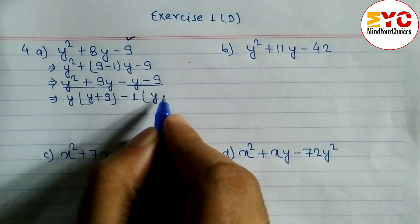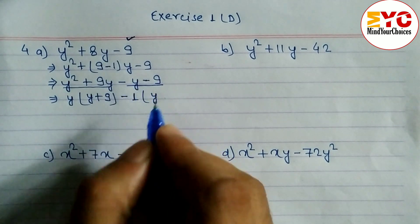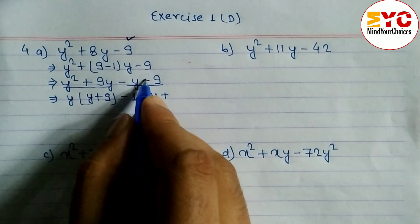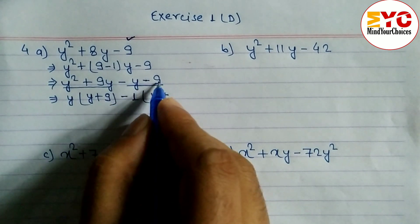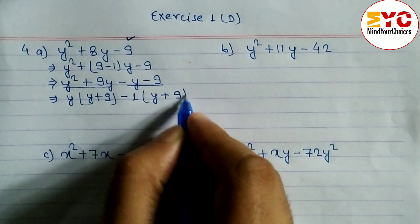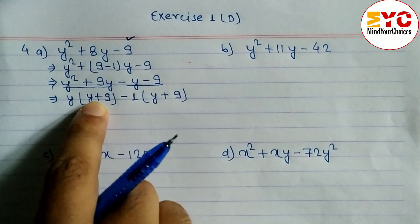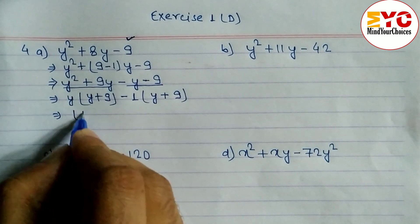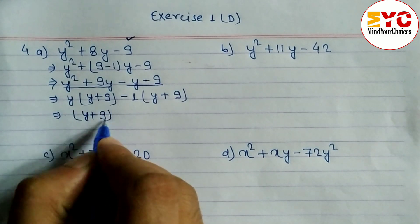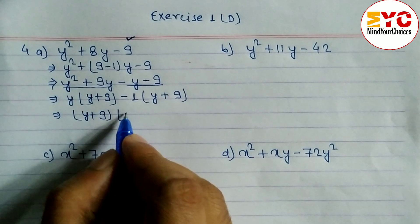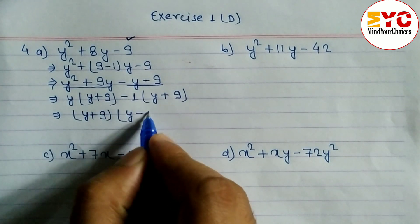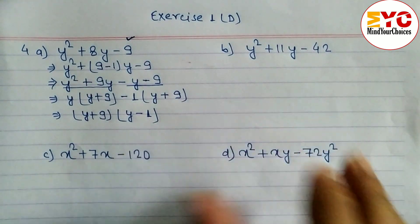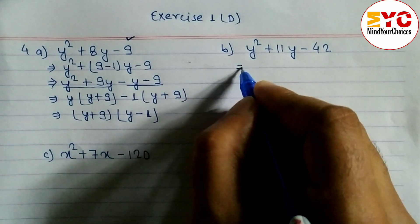When minus is common, we change the sign: if minus we write plus, if plus we write minus. Here it is minus so we write plus 9. Now we have y(y + 9) - 1(y + 9). We take (y + 9) as common factor, leaving (y - 1). So the answer is (y + 9)(y - 1).